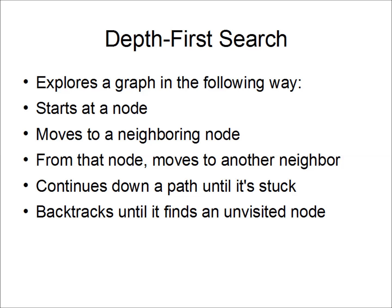From that neighbor, it moves to one of that neighbor's neighbors. It continues down a path until it can't reach any unvisited nodes. Then it backtracks until it finds a node from which it can reach an unvisited node and goes down that path.